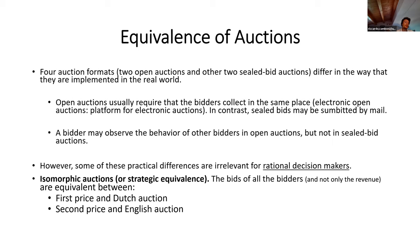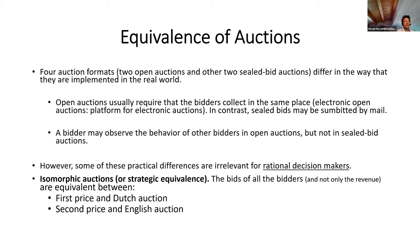Regarding the four auction formats, they differ in implementation: open auctions require bidders in the same place while sealed bids may be submitted via email. The crucial informational difference is that open auction bidders observe others' behavior, while sealed-bid bidders do not. However, for rational decision-makers — and this is in theory, as we'll see in 20 minutes this doesn't hold in the lab — there is a two-by-two strategic equivalence: first-price and Dutch auction bidders should behave exactly the same way, and similarly for second-price and English auctions.